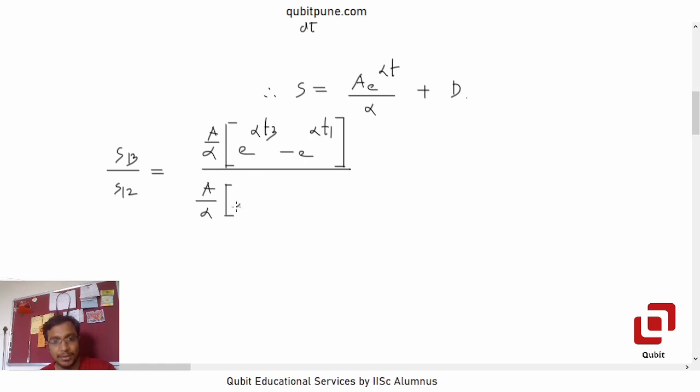And same thing with this: a by alpha into bracket, this time because it is s12, it is e to the power alpha t2 minus e to the power alpha t1. a by alpha goes.